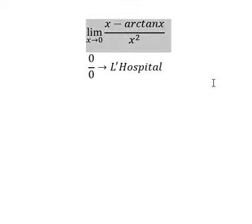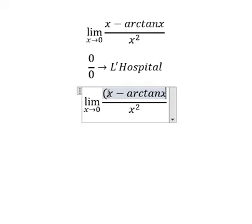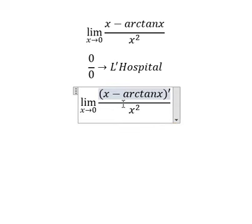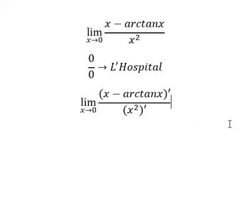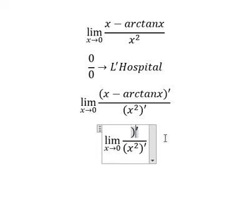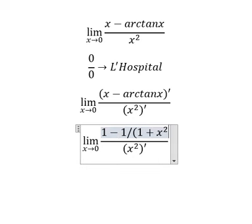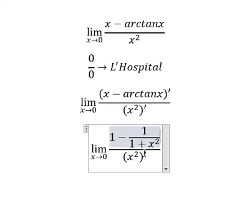That means we need to do first the differential on numerator and denominator. So this one, the derivative is about number one. This one, the derivative is about one over one plus x square. This one, the derivative is about two x.